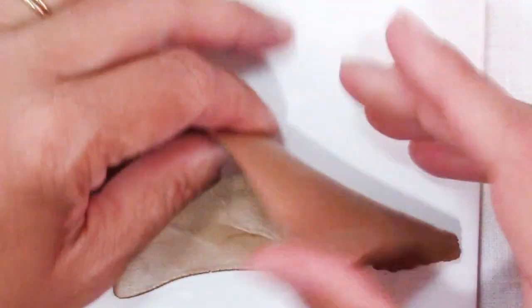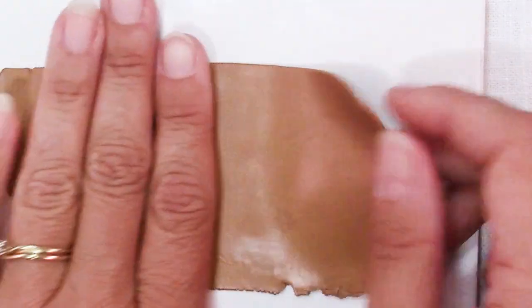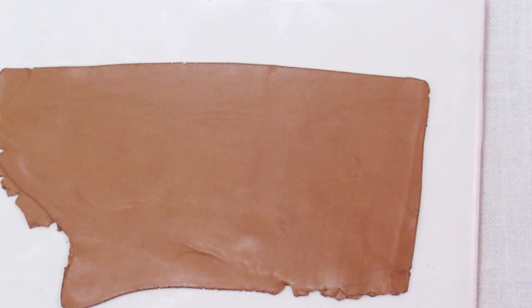Once you have your color mixed, roll that out to a thin, maybe a number three or four setting, somewhere around a millimeter thick.